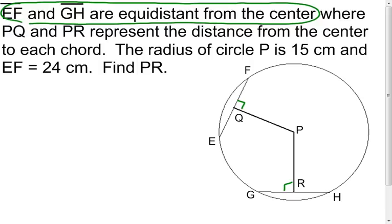Because when you talk about the distance from a segment to a point, it's always that perpendicular distance. So being they're equidistant from the center, I know that segment PQ is going to be congruent to segment PR.